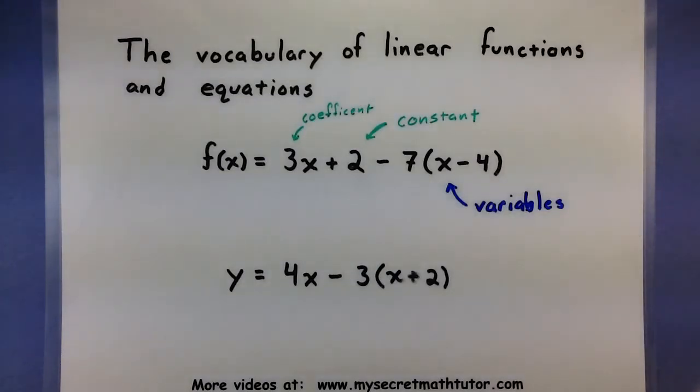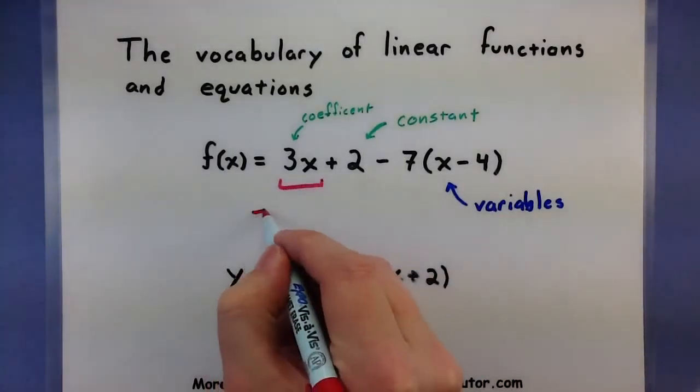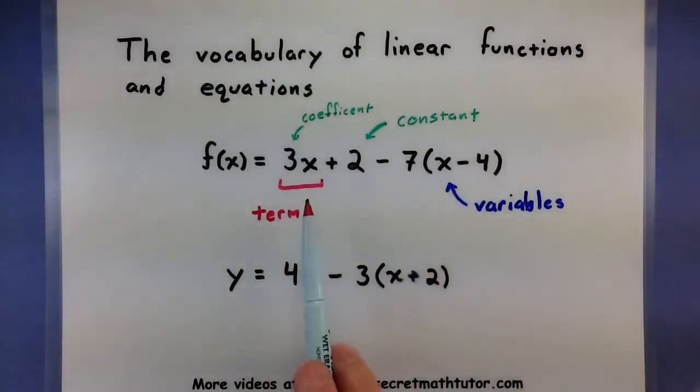Now, one big thing that you'll hear in terms of parts of functions or equations are terms. Terms are pieces that are being added and subtracted. So, this 3x, the entire thing is considered a term. 2 is also considered a term. Another way that you could describe constants is a term that is made up of only a number.